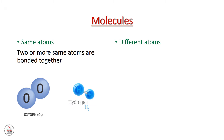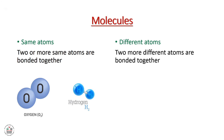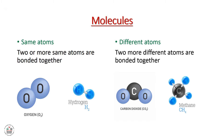The second type of molecules is composed of different types of atoms — two or more different atoms bonded together. For example, carbon dioxide is composed of one carbon atom and two oxygen atoms. Another example is methane, CH4, composed of one carbon atom and four hydrogen atoms. In these two examples, the atoms are different.